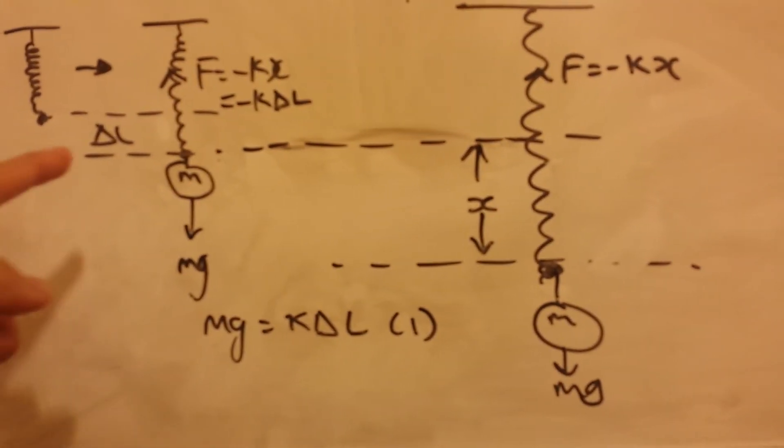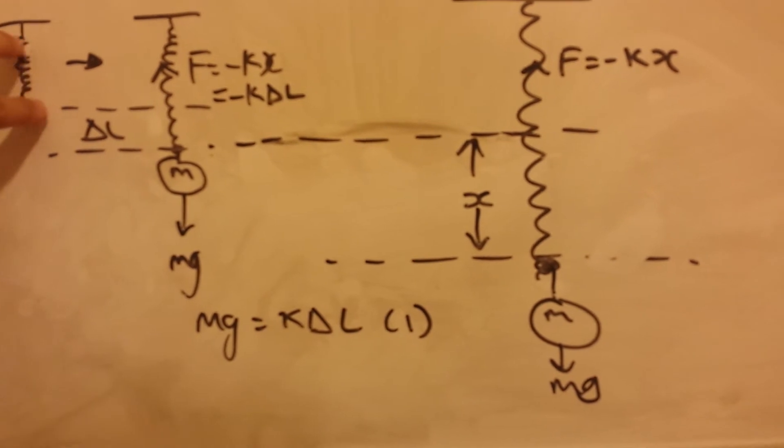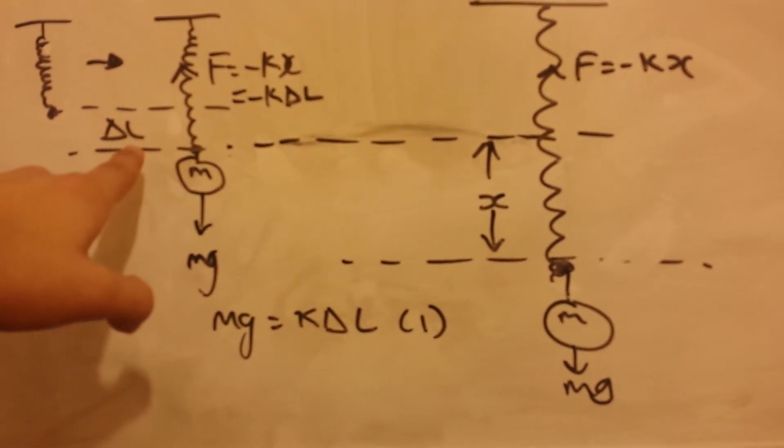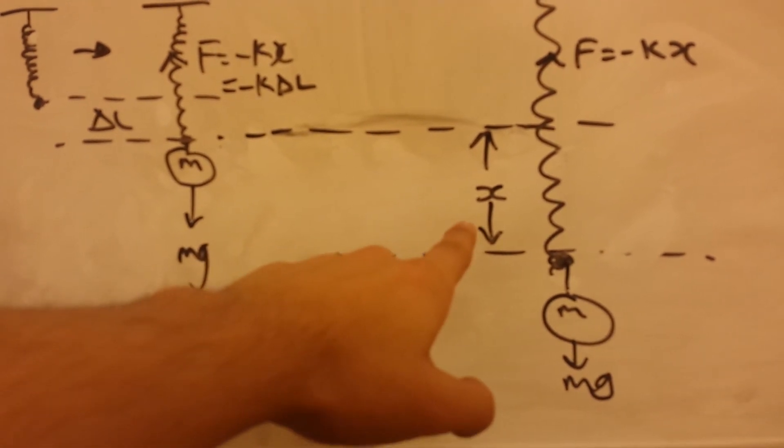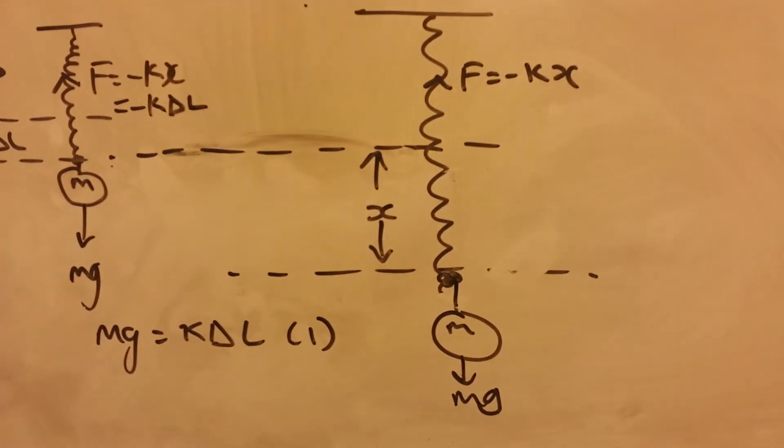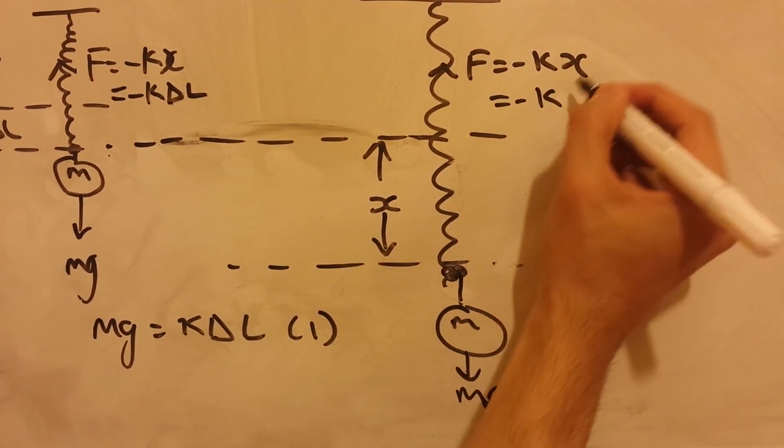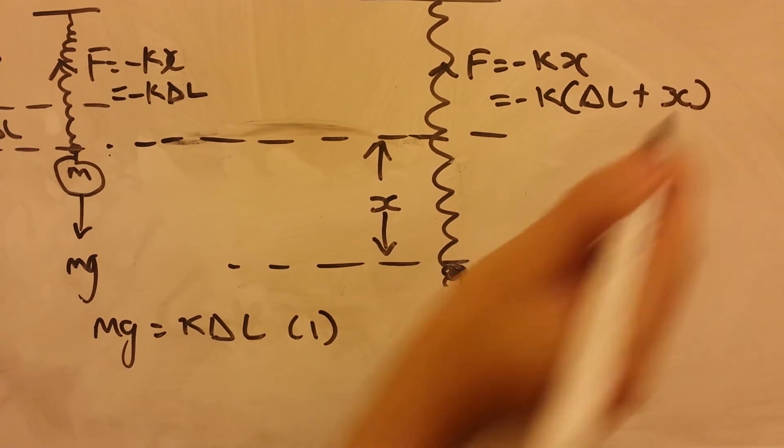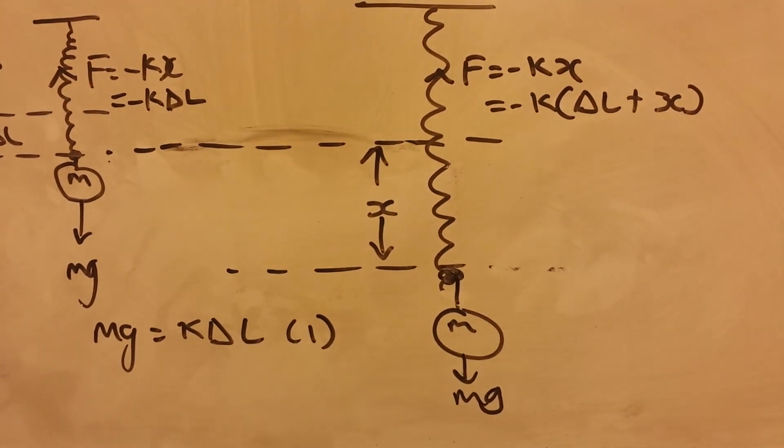Well, the total extension is, it was initially like this, and then it was extended by an infinitely small of L, and then we displaced it by an amount of x.